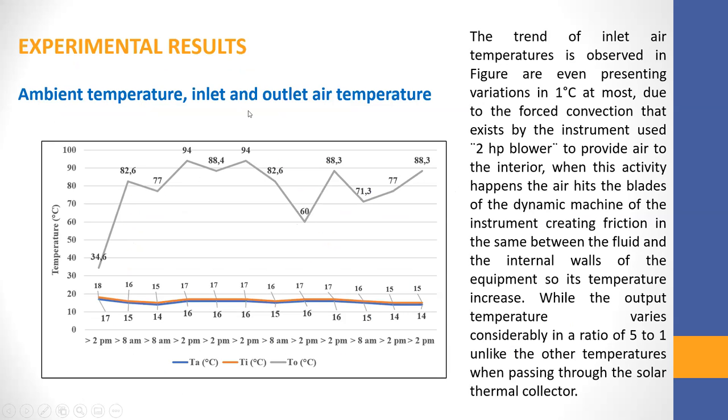Ambient temperature, inlet, and outlet air temperature. The trend of inlet air temperatures is observed in the figure with variations of 1°C at most due to forced convection that exists by the instrument used, the blower, to provide air to the interior. When this activity happens, there is the blade of the dynamic mechanism of the instrument creating friction in the space between the fluids and the internal walls of the equipment, so its temperature increases.